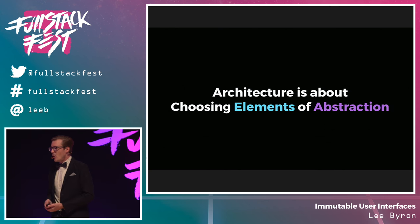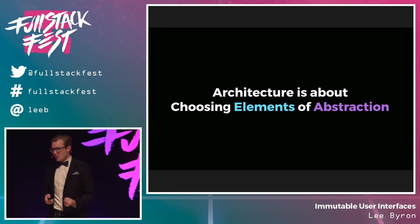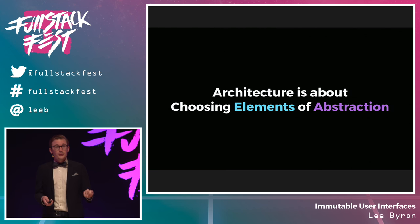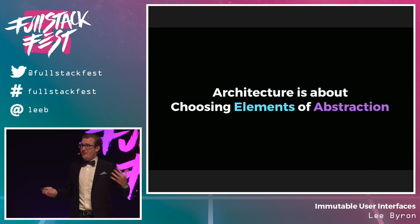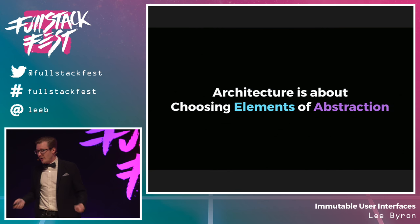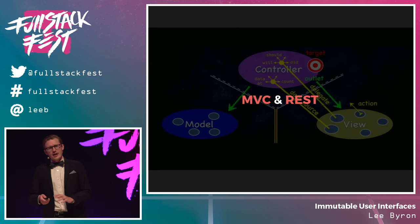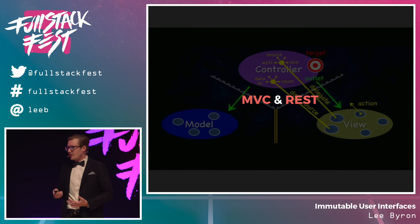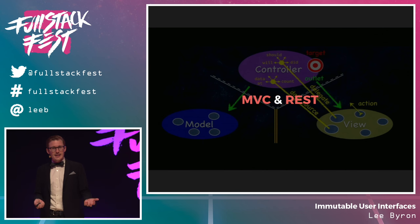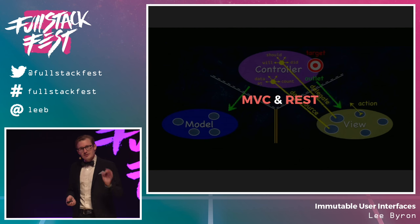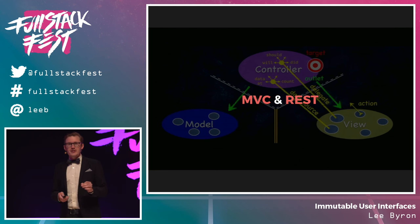In software architecture, we make fundamental structural choices based on our understanding of what our app needs to do and the challenges it will face. We choose our abstractions to create variation and robustness, support the role of our app, solve its primary challenges, and create a productive space for our engineers. For information-rich, user-facing apps like the web and mobile apps many of us build, there's been a dominant architecture over the last decade — MVC and REST.